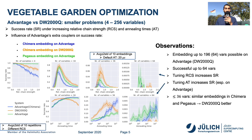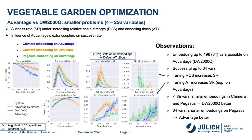As problems get bigger, the gap between chain lengths for Chimera and Pegasus embeddings grows. Therefore, Advantage's potential becomes visible in larger problems. For up to 36 variable problems, we can see how D-Wave 2000Q mostly outperforms Advantage. Whereas for 64 variables, Advantage has a significantly shorter embedding and this reflects on the better results obtained.